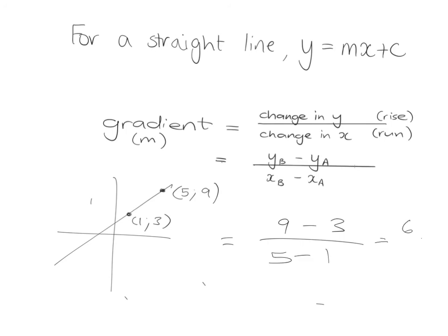9 minus 3 is 6. 5 minus 1 is 4. And we can simplify that down. And we'll get that the gradient of the graph is 3 over 2. And we'll know then that this graph has an equation 3 over 2 X plus C. And we'll look at a later stage as to how we can work out that C.